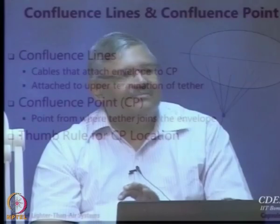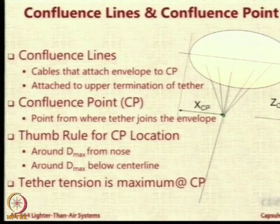The location of the confluence point is important. The x-coordinate of the confluence point from the leading edge (x_cp) and the vertical location below the balloon axis (z_cp) — experience has shown that both these numbers should be around maximum diameter. So the confluence point should be located approximately one maximum diameter below the centerline and approximately one maximum diameter behind the nose. If you do this, you will get a reasonably stable aerostat. Also important: tether tension is maximum at the confluence point because it is the place where everything meets.